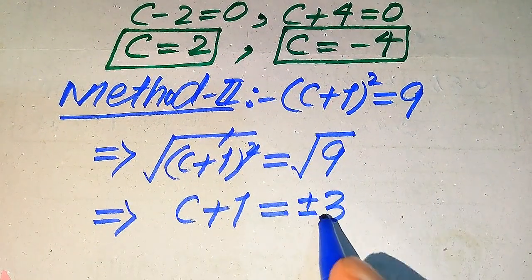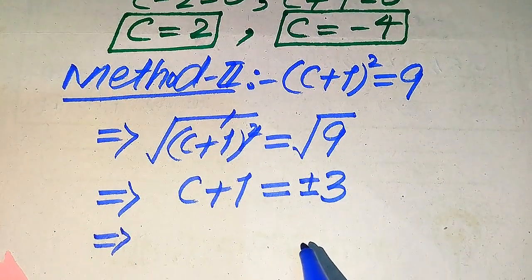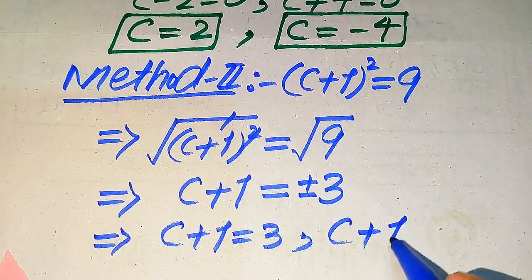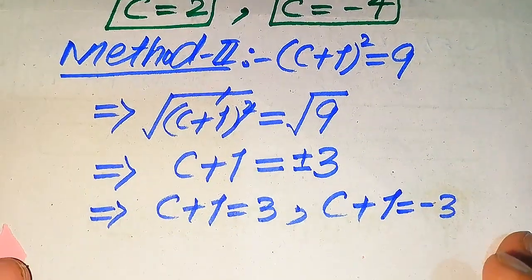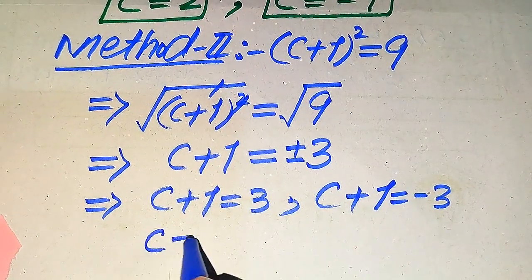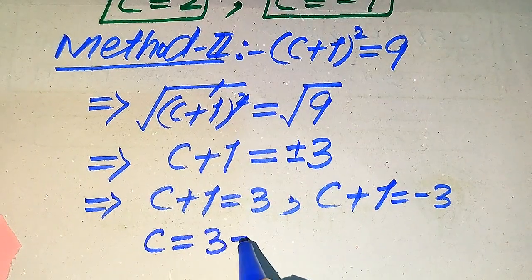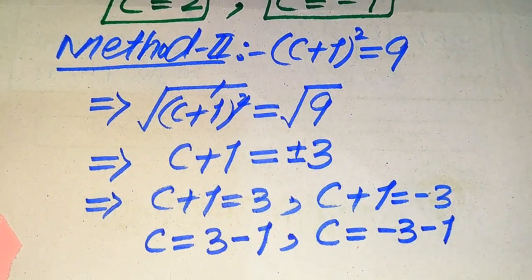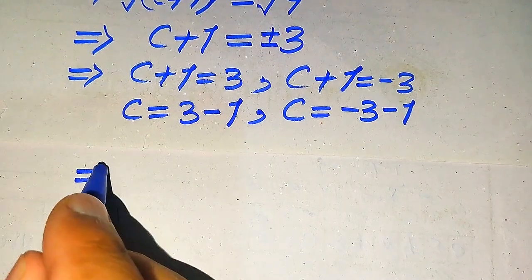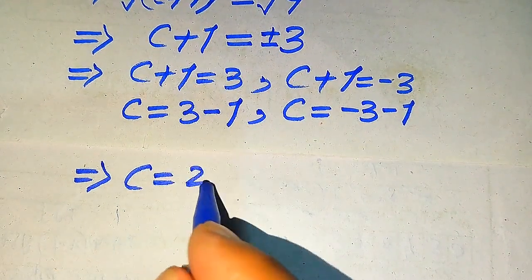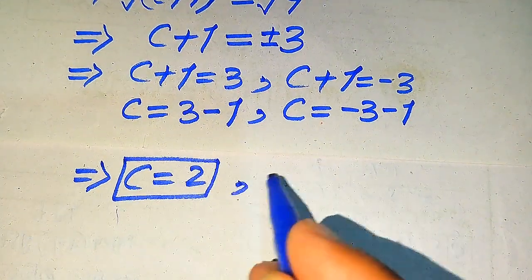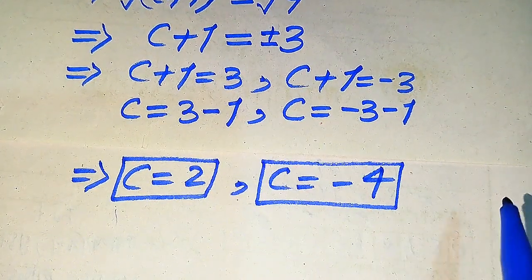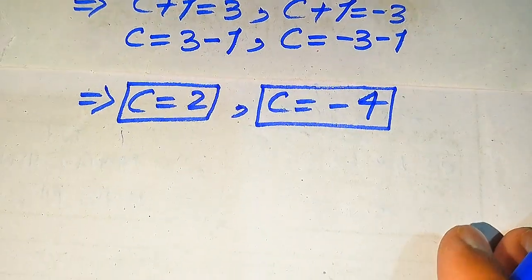When we apply square root on both sides, we write a plus-minus sign on the right hand side. We break this into two cases: the positive case gives c + 1 = 3, and the negative case gives c + 1 = −3. Moving +1 to the right hand side: from the first case c = 3 − 1 = 2, and from the second case c = −3 − 1 = −4. Both methods give the same roots.